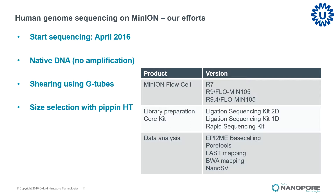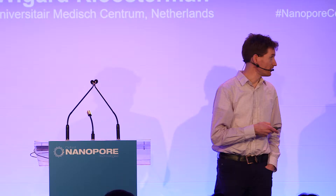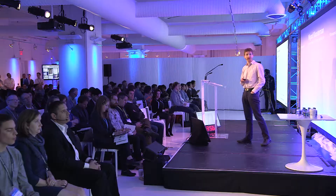We typically did some mild shearing in G-tubes and used various flavors of protocols over time. In some cases we used size selection using the PippinPrep, in some cases we didn't, to get a feeling for what works and what does not. After around 90 runs in total — R7 and R9 — we reached just below 10x genome-wide coverage of this sample with chromothripsis.